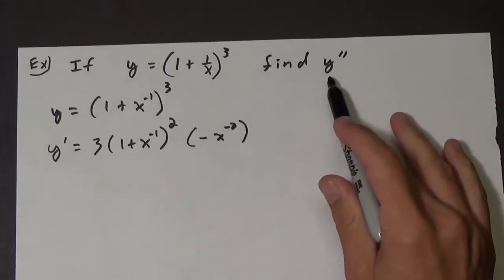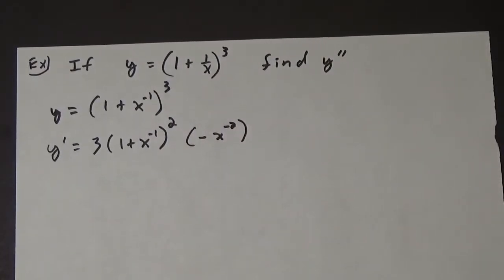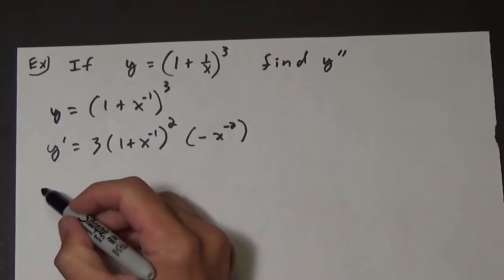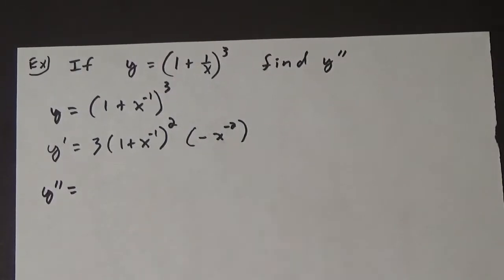Now if the question just asks us to find the first derivative, we would rewrite this, clean it up. However, we need the second derivative. And notice that for this second derivative, we now have a product rule.